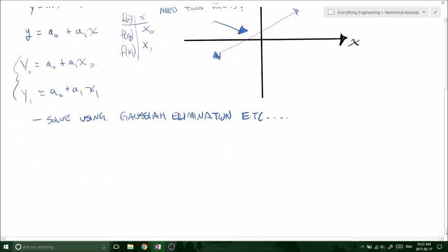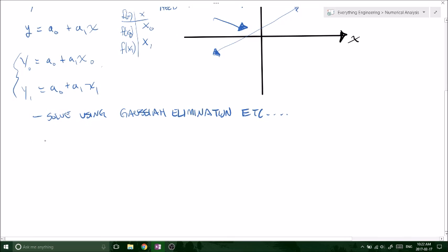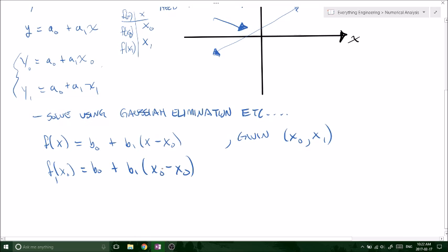Let's see how we can do that. Remember the general form of our line is, let's call this b naught. This is the general form of our line. If we have points x naught and x1, we can plug those in. So f1 of x naught is b naught plus b1 times x naught minus x naught. If you notice, this equals 0. Therefore, f1 of x naught is just equal to b naught.